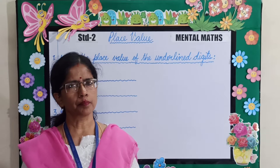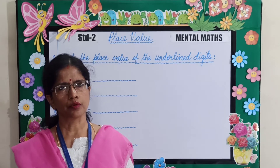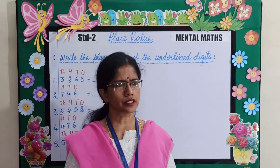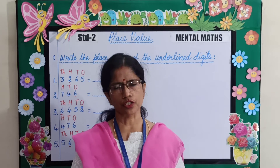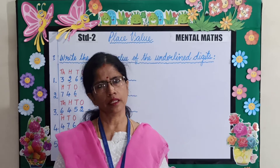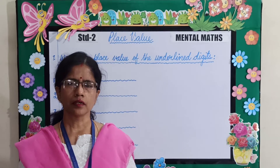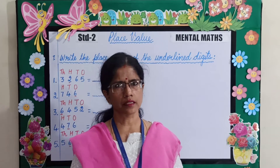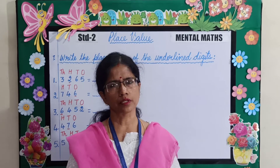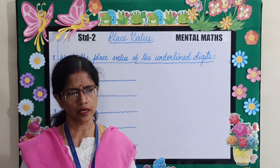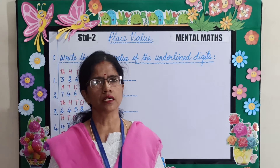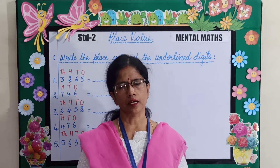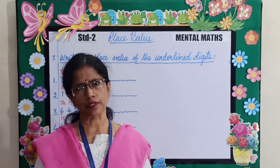First, we will take up place value. Place value means the digits according to its position in the number, such as ones, tens, hundreds, thousands, etc. To understand this, let us take up some examples.